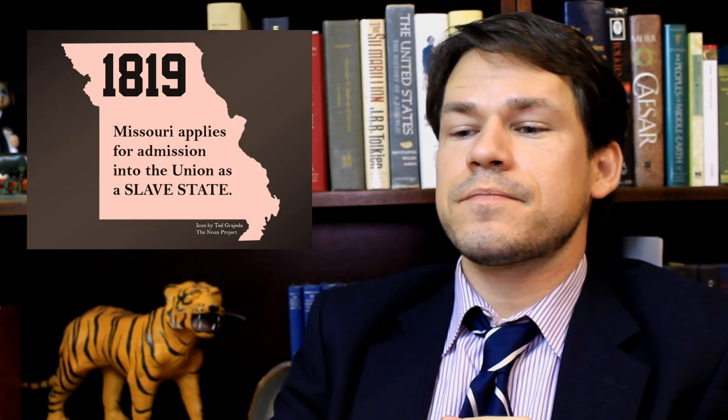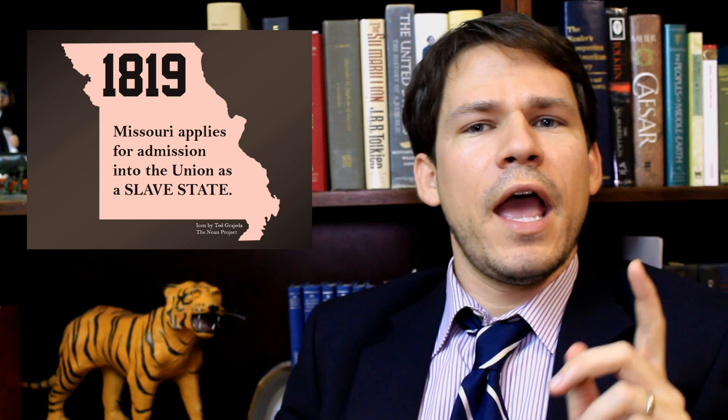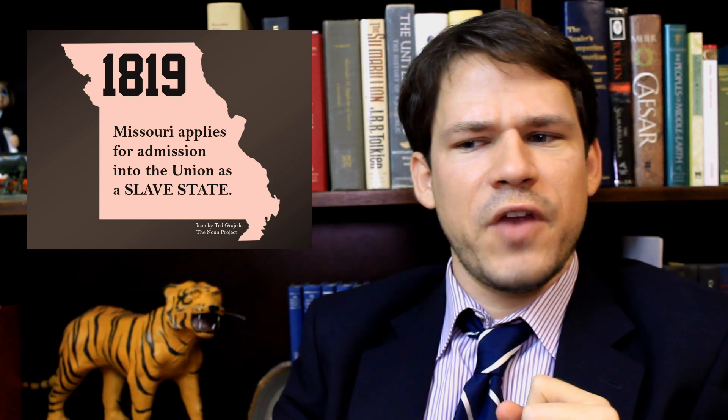So the state applies for admission and Congress can say, 'Here's what you have to do.' They can place preconditions; they can say whether your constitution is approved or not. Now once you're in, you're in — but Congress can decide the conditions by which you were allowed in. In 1819, Missouri applies for admission into the Union as a slave state.